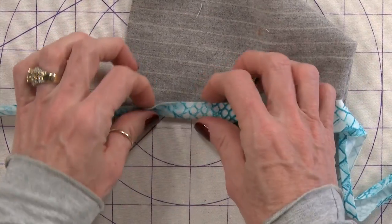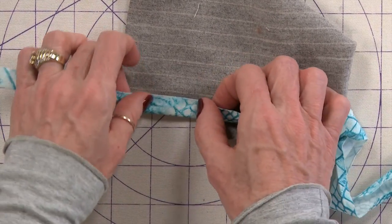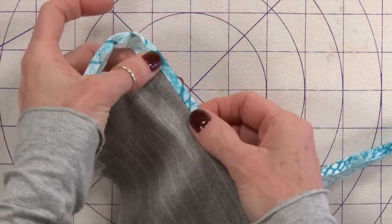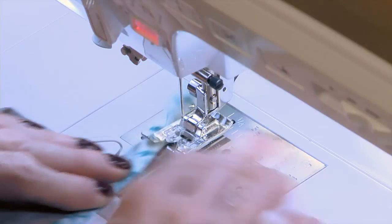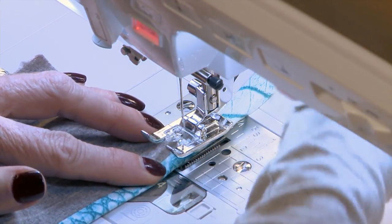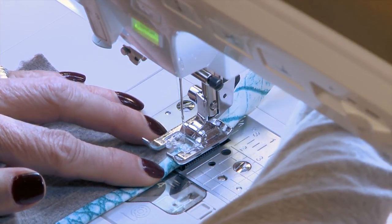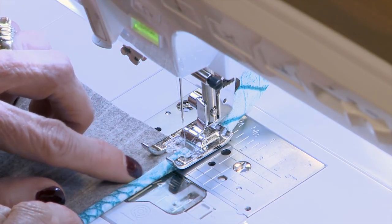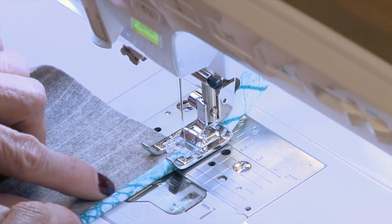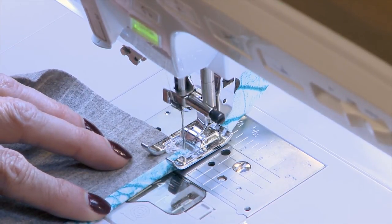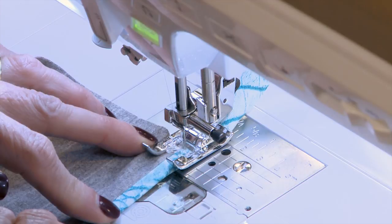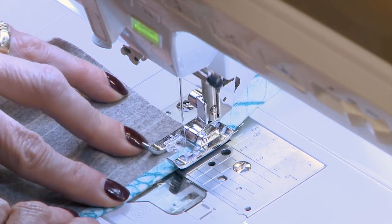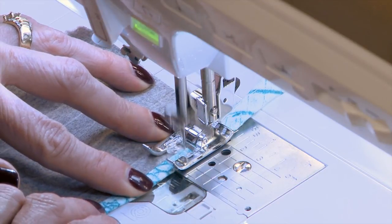And you can see on this side, it actually overlaps that seam. So now take it back to our machine. Line the needle up exactly where that fold line is right there. Put your needle in. And stitch right in that little ditch.